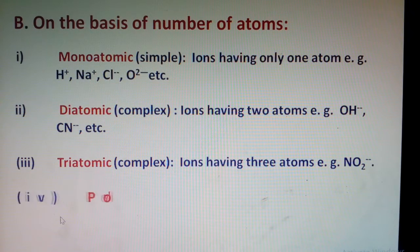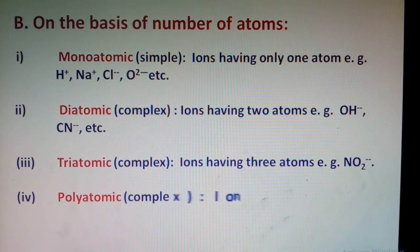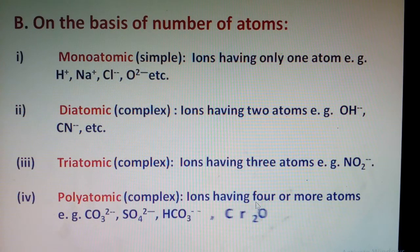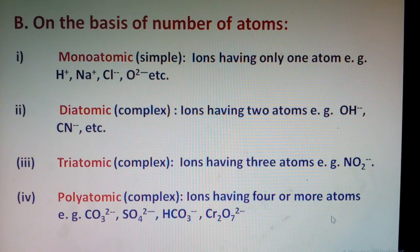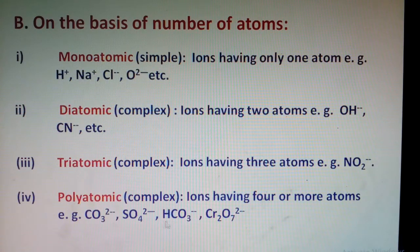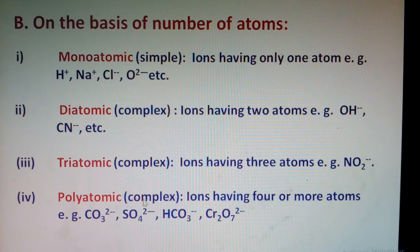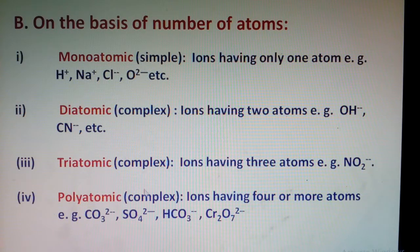Polyatomic ions: all those ions which have three, four, or more atoms. Examples include carbonate, hydrogen carbonate with five atoms, dichromate, etc. So diatomic, triatomic, and polyatomic are all complex ions.